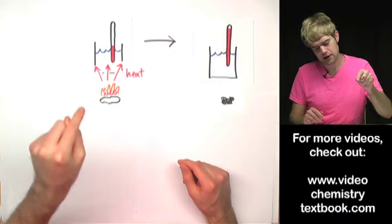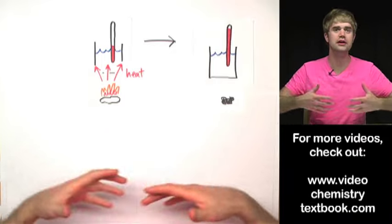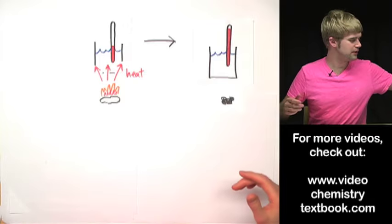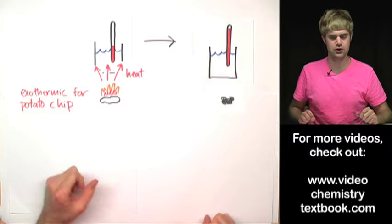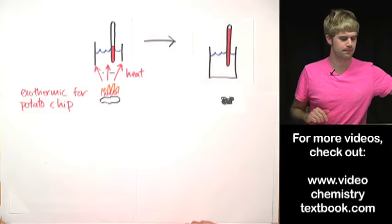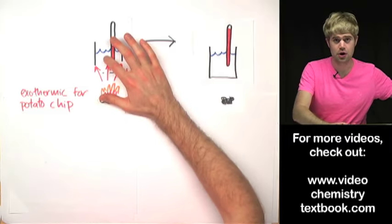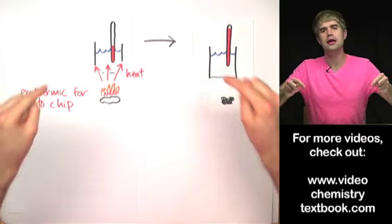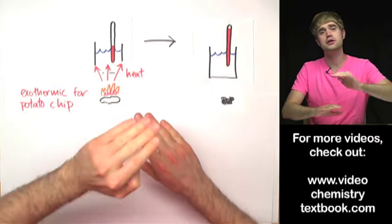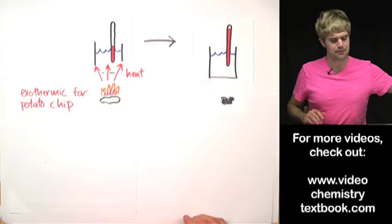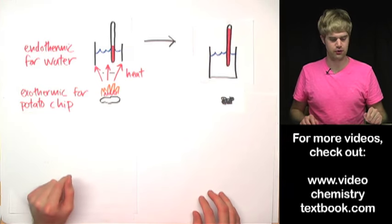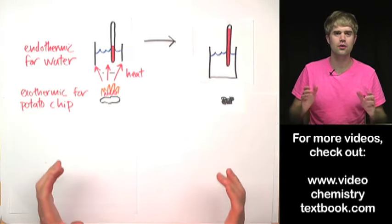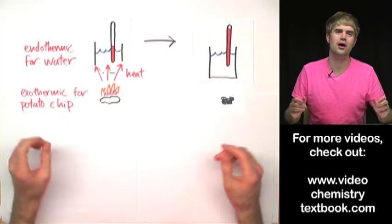Now, the potato chip as it burns is releasing heat out into the environment. So that means that this reaction is exothermic for the potato chip. Heat is moving out. But on the other hand, heat is moving into the water causing its temperature to rise. So that means that from the water's point of view, this is an endothermic process.